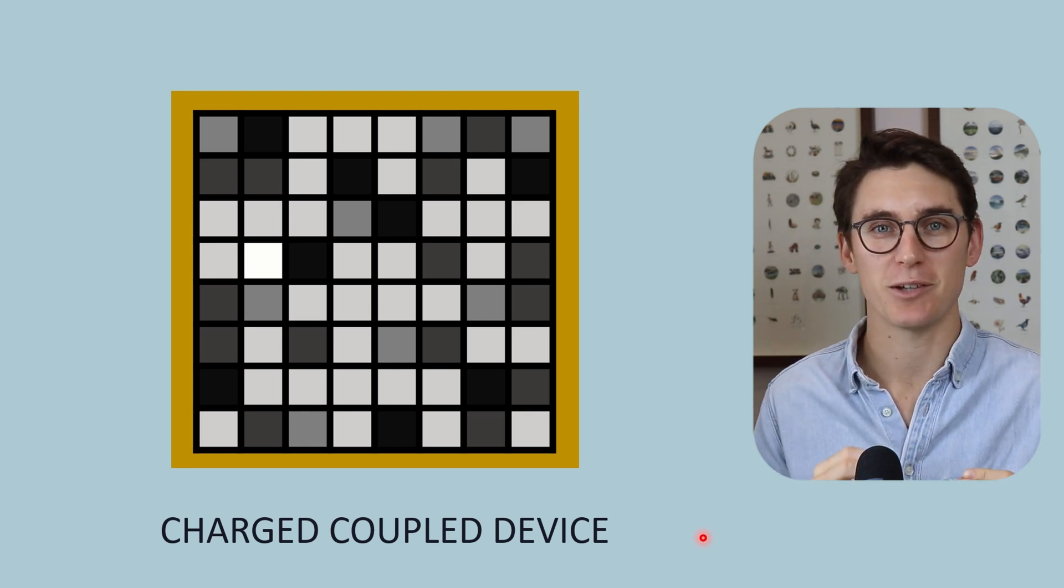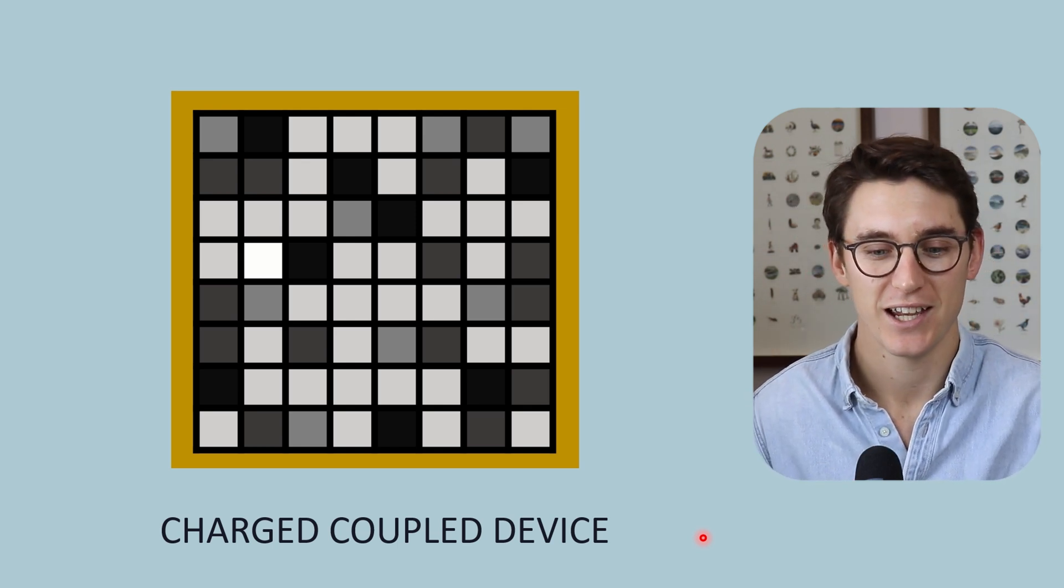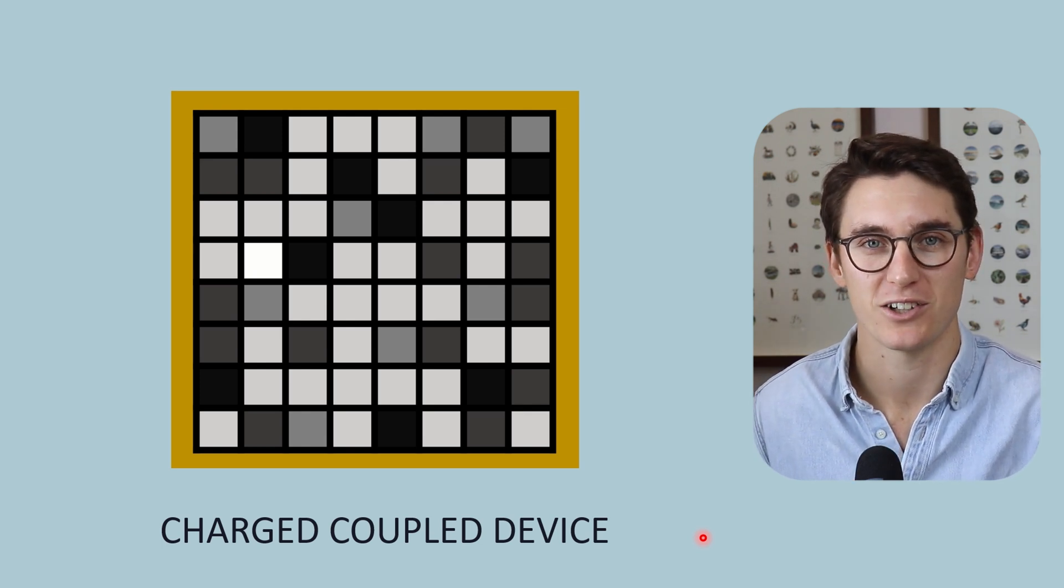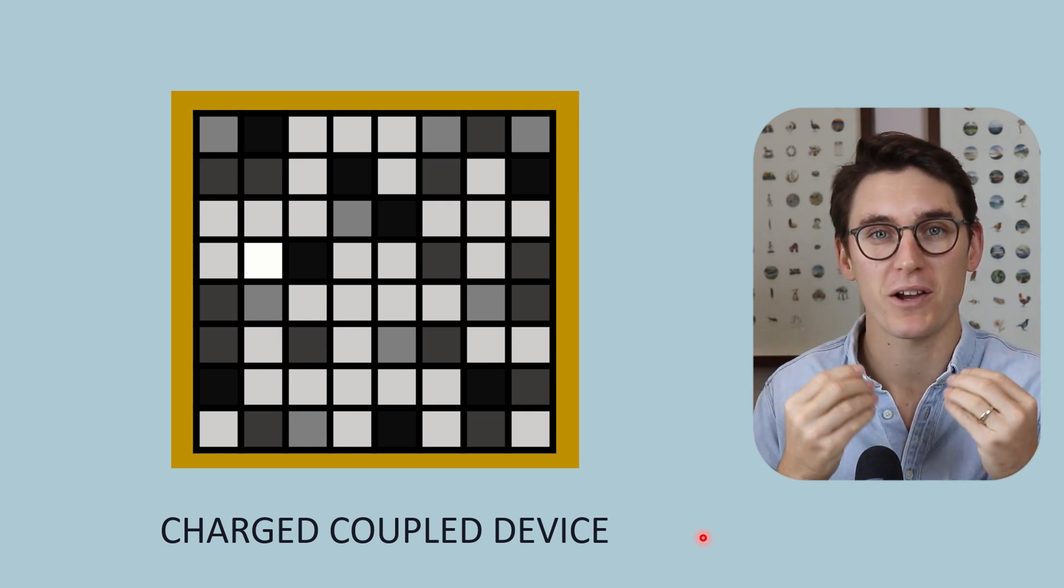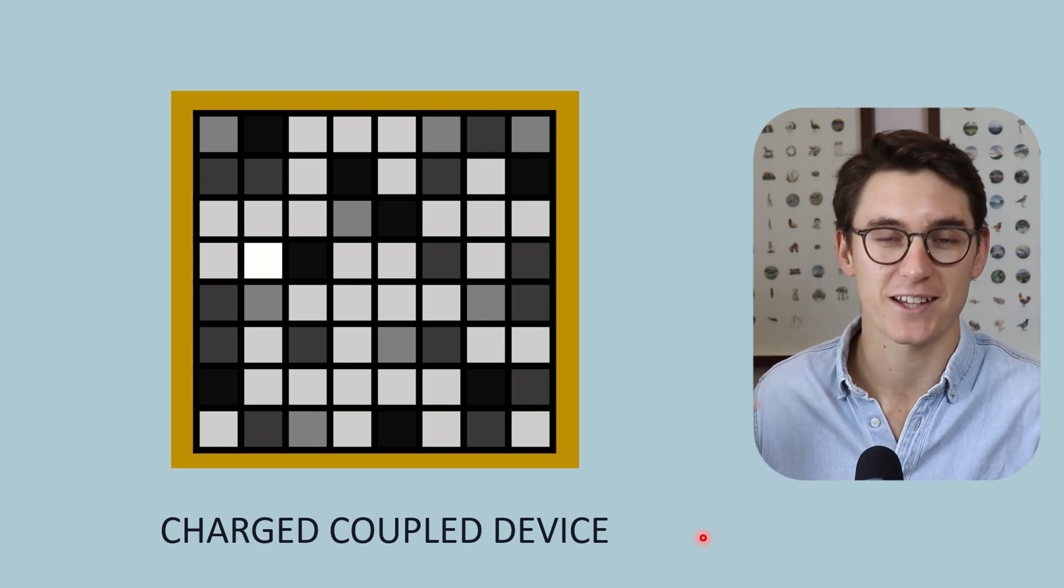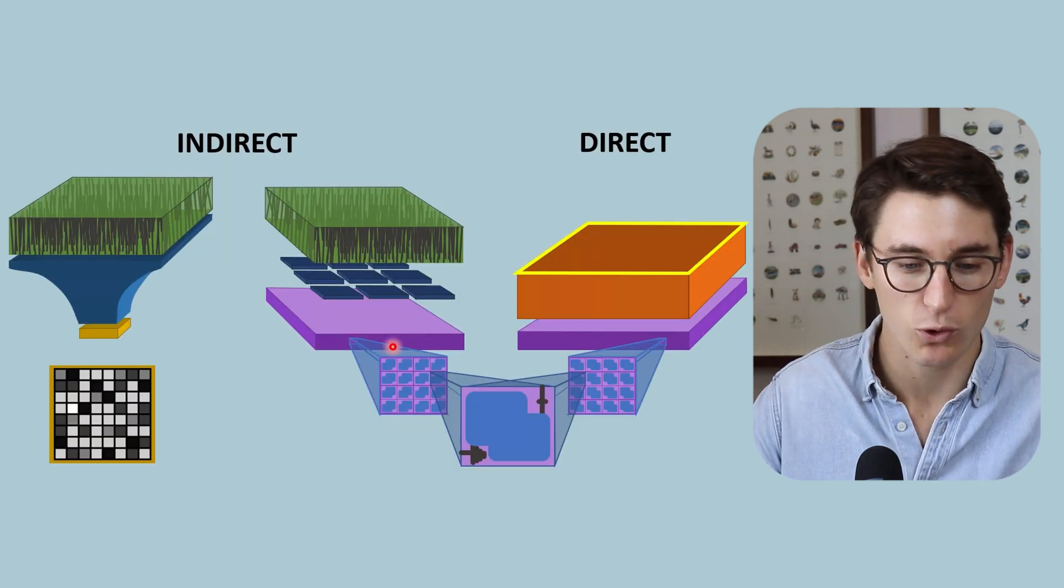Now a CCD chip has the ability to take light and convert that into a digital signal. In fact, it's the same chip that is used in video cameras like the one filming me now. It's able to take the light coming from my face into the lens of the camera, convert that light into an electronic signal that can then be converted into an image.